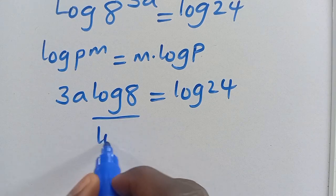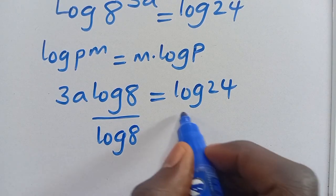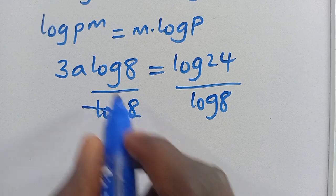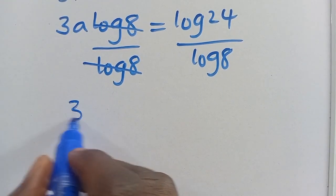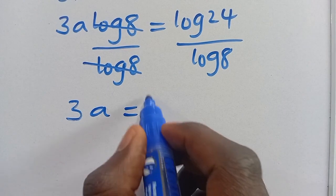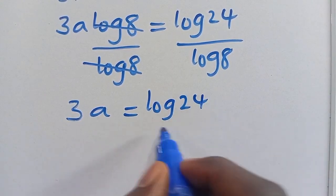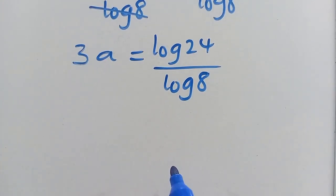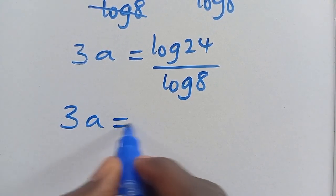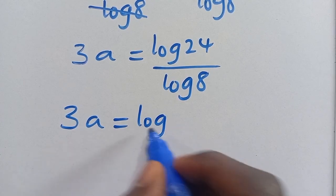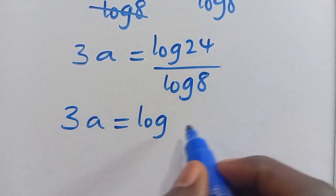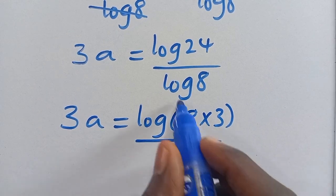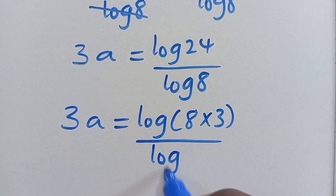Let's divide both sides by log 8. This cancels, leaving 3A equals log 24 divided by log 8. We can write 24 as the product of 8 times 3, so we have 3A equals log of (8 times 3), divided by log 8.